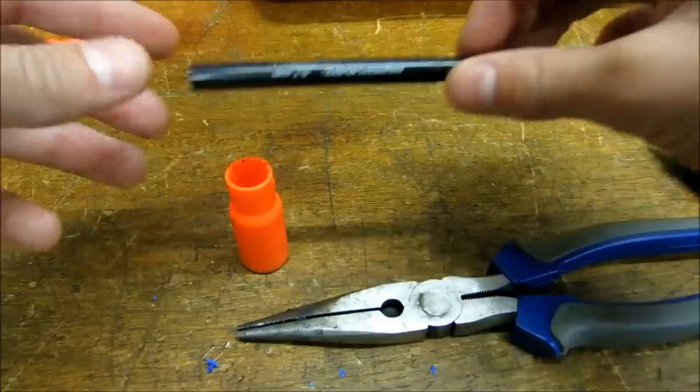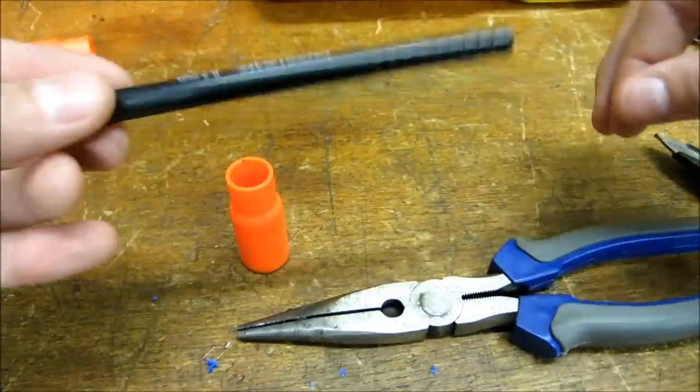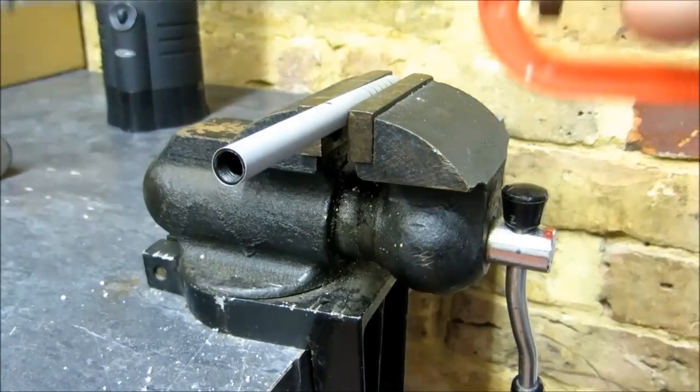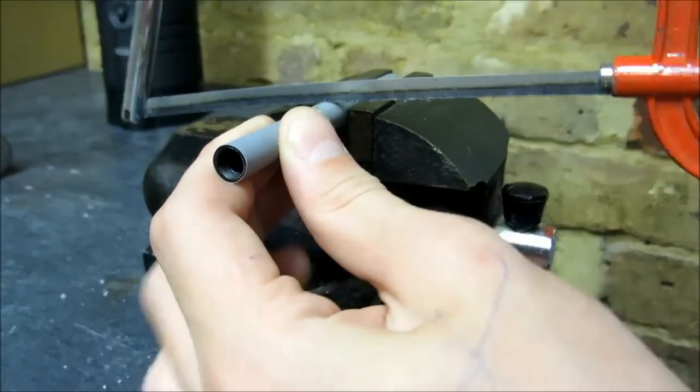Now get your pen and take off the top and bottom of it so that BB bullets can slide clearly through. You now need to find the halfway point of your pen and cut straight down the middle of it.